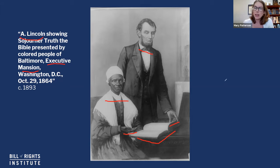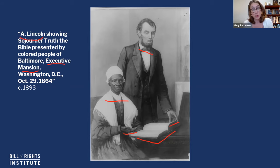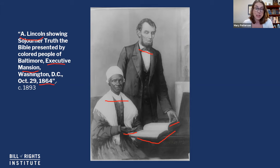Right away I have a few questions. Why is Sojourner Truth at the White House? Did Lincoln invite her there? She must have been pretty well known to get an invite — that's something most people don't get to do during their lifetime. I can see from the date that this is really nearing the end of the Civil War. Does that have anything to do with why Sojourner Truth is with Abraham Lincoln? I have this image as a starting point and some initial questions, but I think I need a little more context before I can really go back to our guiding question.